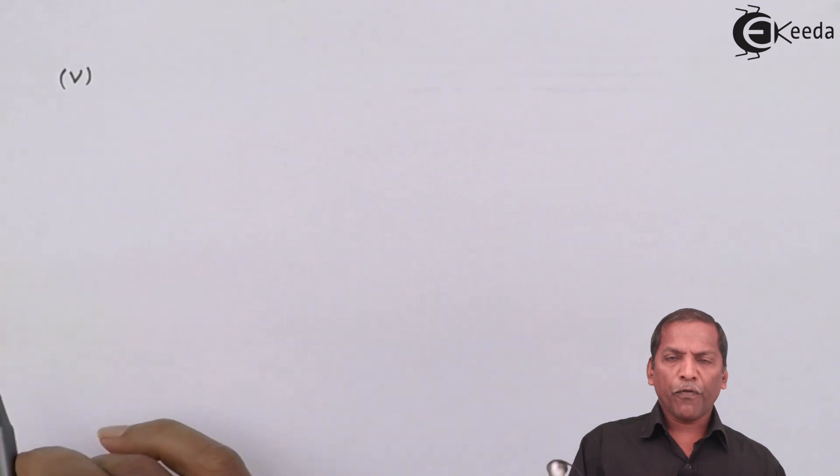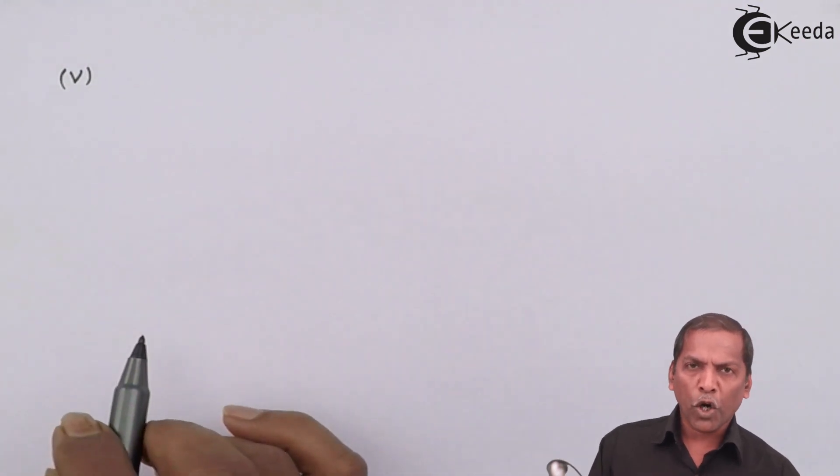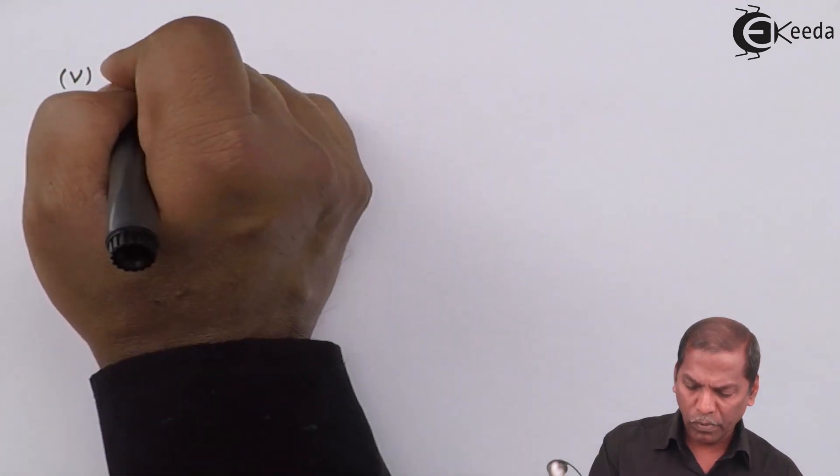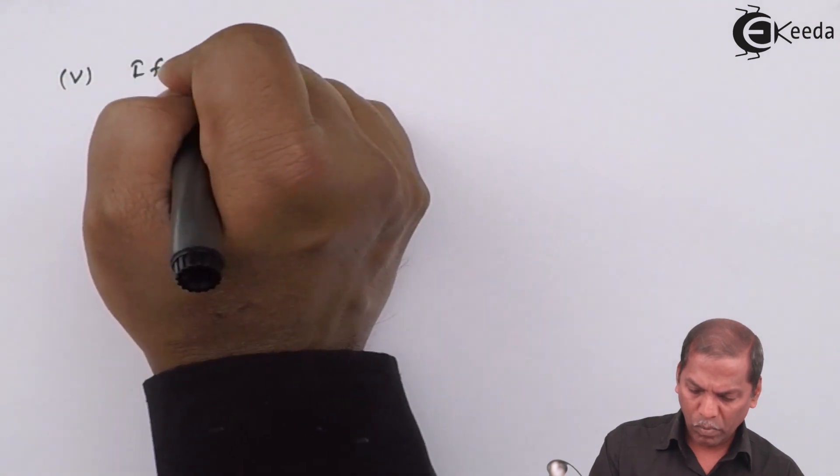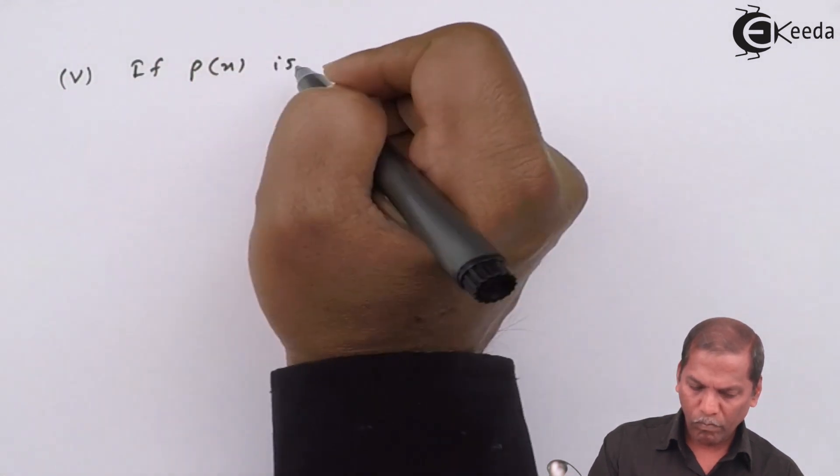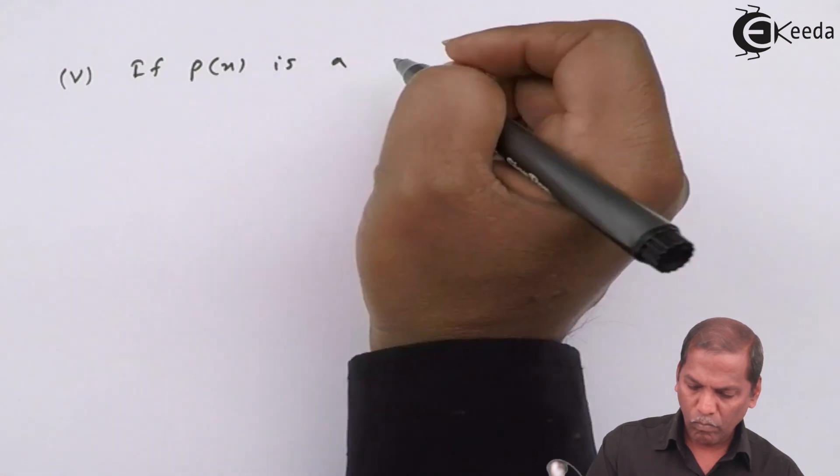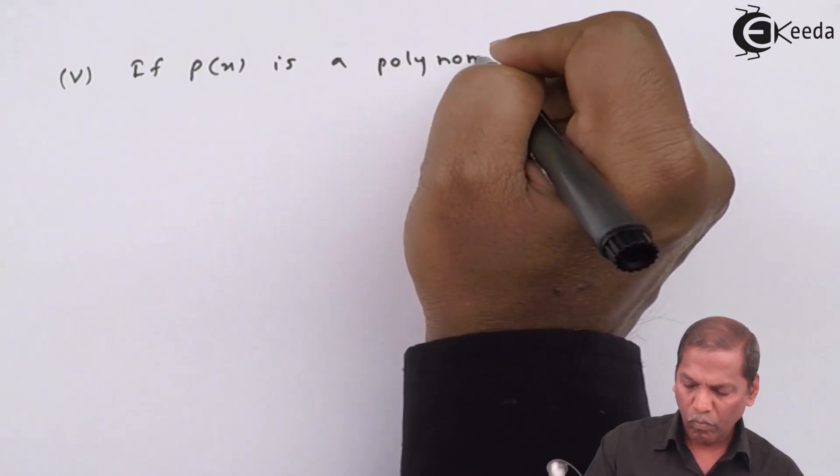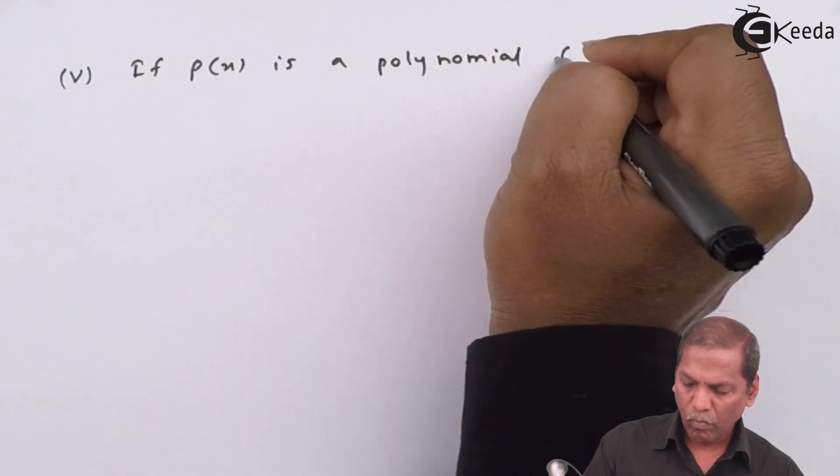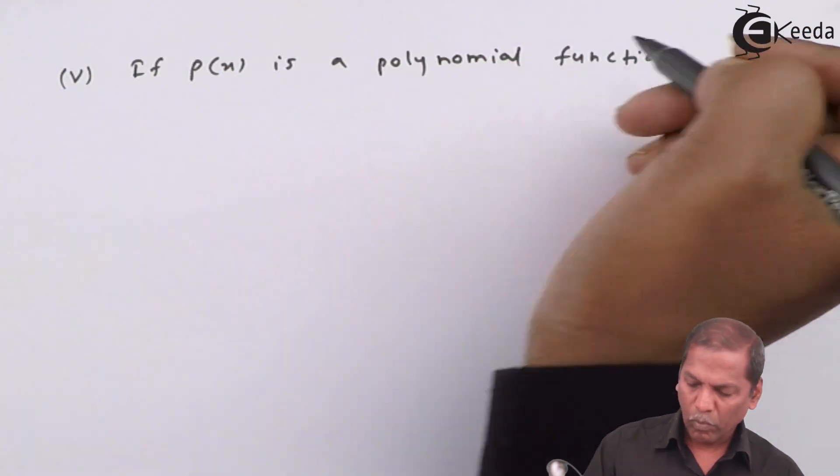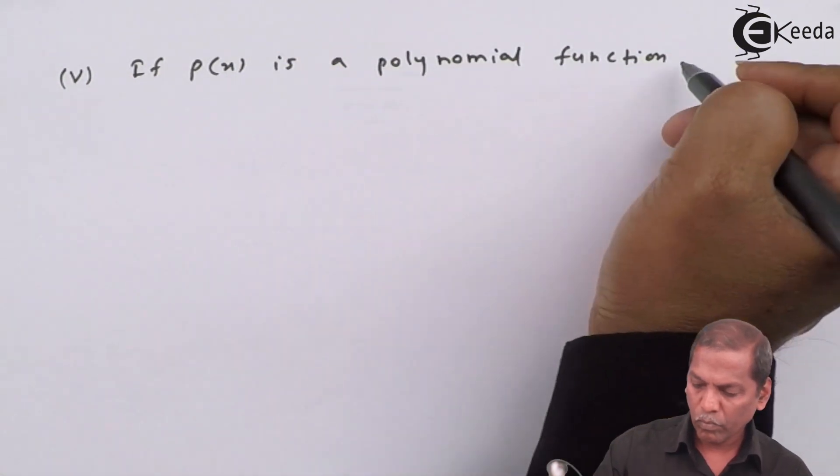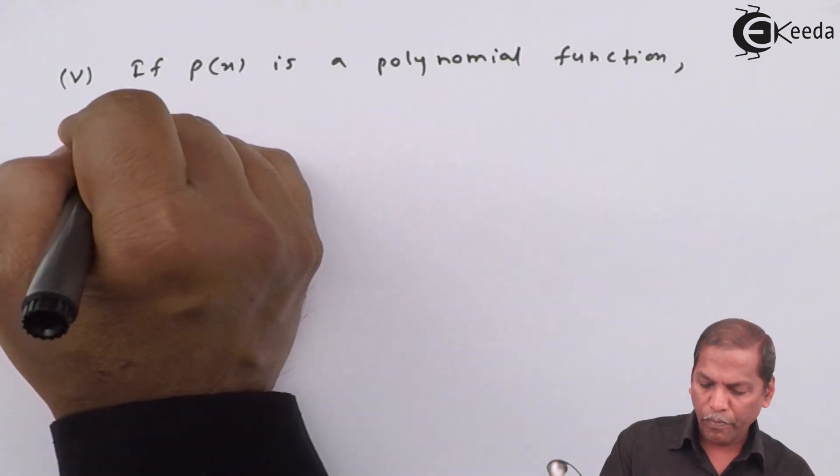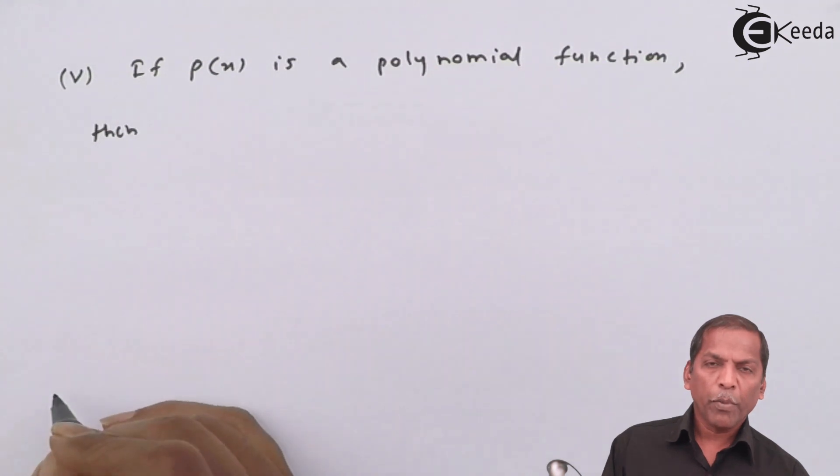Number five: if p(x) is a polynomial function, then limit x approaches a of p(x) equals p(a).